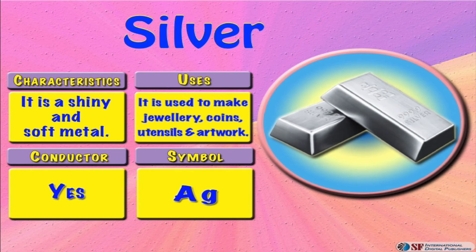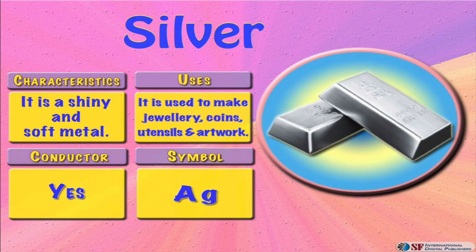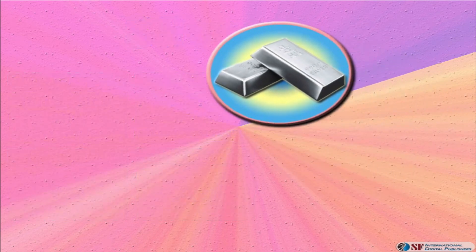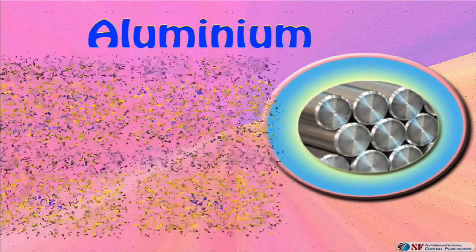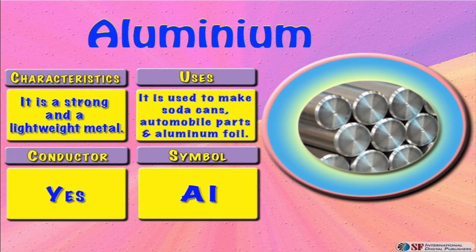Aluminium. It is a strong and lightweight metal. It is used to make soda cans, automobile or car parts, and we use it in our kitchens to wrap things. It's a good conductor of electricity, and its symbol is Al.